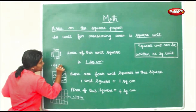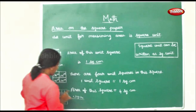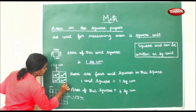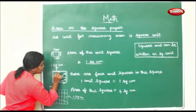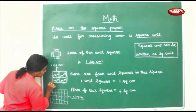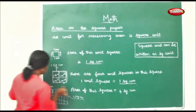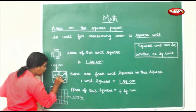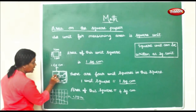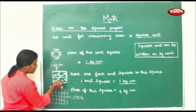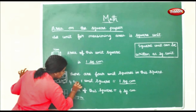Area of one square unit is one square centimeter. There are four unit squares in this shape. One, two, three, four. So the total is four square centimeters.